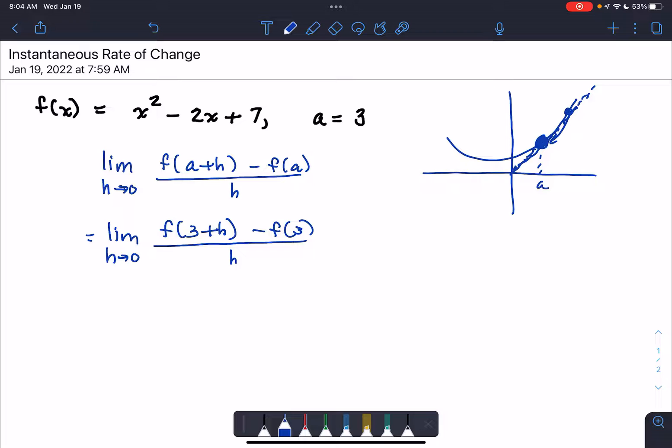There is a notation for instantaneous rate of change that has to do with f, so we actually call this f prime of a, and that more or less is a meaning because it's called the derivative, which we'll talk about in the next section.